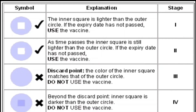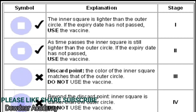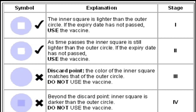The first stage is when the inner square is lighter than the outer circle. If the expiry date has not passed, the vaccine can be used. As time passes, the inner square remains lighter than the outer circle, and if the expiry date has not passed, the vaccine can still be used — that is stage 2.